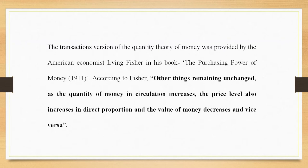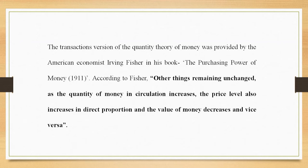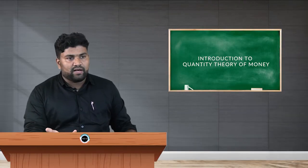Irving Fisher says that when other things remain constant, when the supply of money doubles, the price level will also double. There is a direct and proportional relationship between money supply and price level in the economy. Whenever money supply or money circulation increases, the price level also increases in direct proportion.